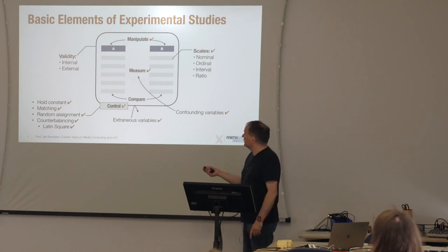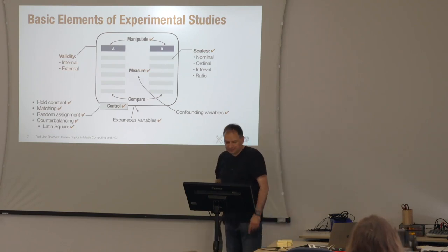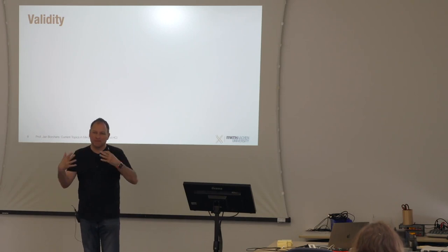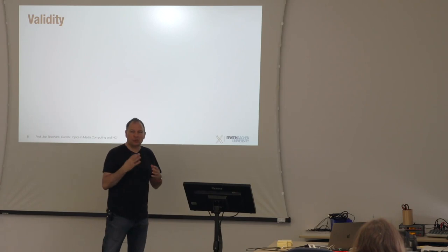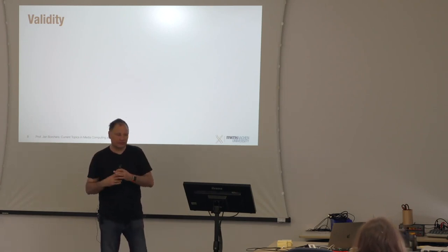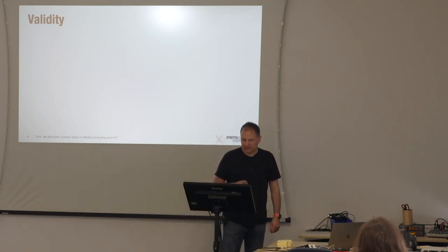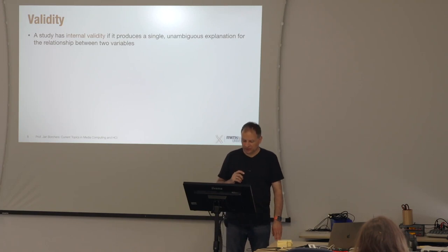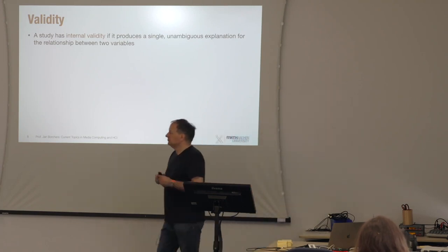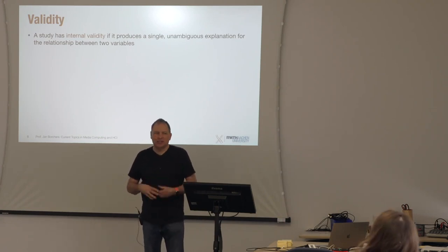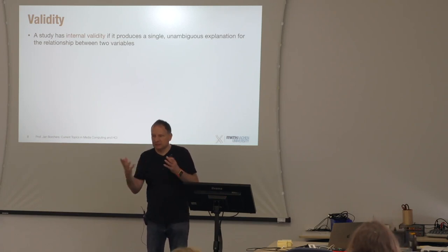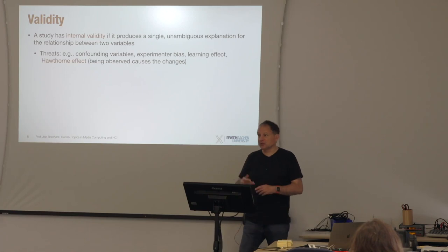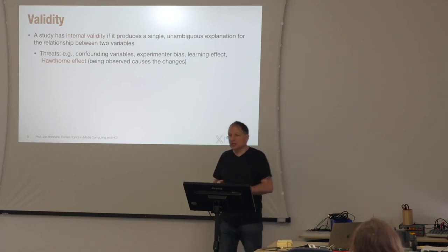Next up is the question of validity — internal and external validity. These two are actually almost a trade-off in most cases. Internal validity means you can create a single unambiguous explanation for the relationship between two variables. In layman's terms, internal validity means you set up your experiment correctly. Threats to internal validity include confounding variables, and experimenter bias.